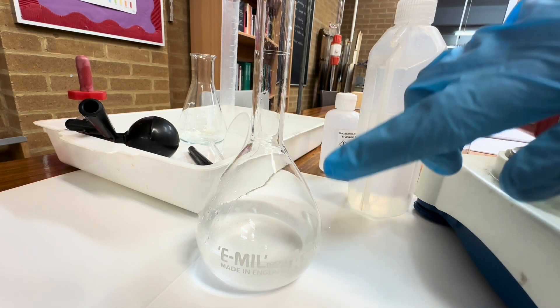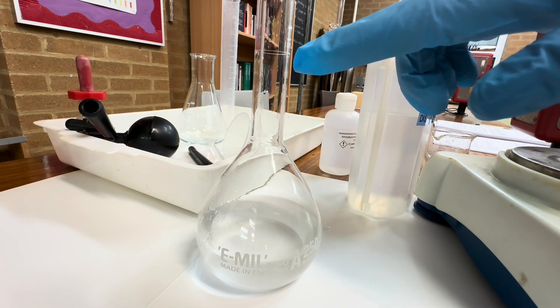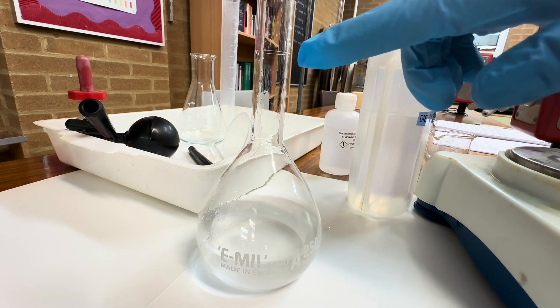Now the next thing we need to do is fill the volumetric flask so the bottom of the meniscus of the water is exactly equal to this marker here.